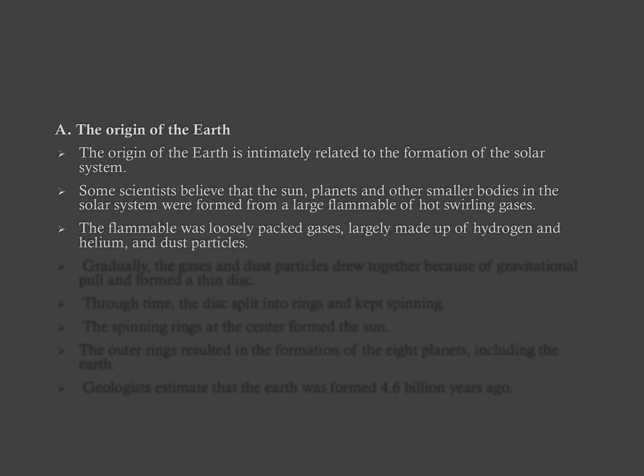The flammable which formed the sun, the planets and other smaller objects in the solar system was made up of loosely packed gases. Those gases are called hydrogen, helium and dust particles.